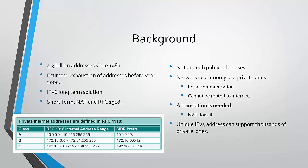The RFC defines the division of the private internet addresses, which came in Class A, Class B, and Class C. Some facts are that there are not enough public addresses available. Because of the short-term solutions, networks commonly use private addresses for local communication, but these addresses cannot be routed to the internet. Translation is needed, and that is where NAT comes in. A unique IPv4 address can support thousands of private ones.